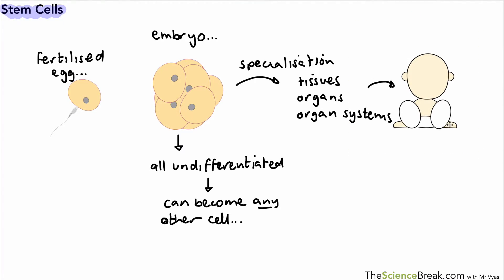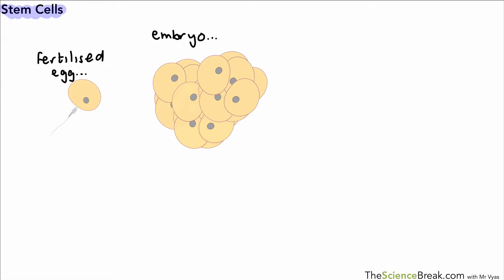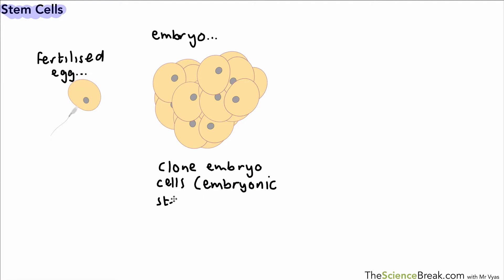Those organ systems go on to make an individual - that's what happens under normal circumstances in a normal pregnancy. Now, if we rewind and go back, the cells of the embryo can actually be cloned. Scientists can make identical copies of them, and those copies can then possibly be made into any other type of cell that the scientists might want.